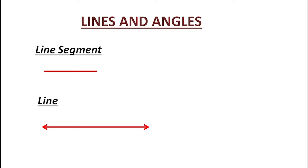Next is line. A line has no endpoints — we can extend it on both sides. That means we can see two arrow marks on both sides, so we cannot measure it.